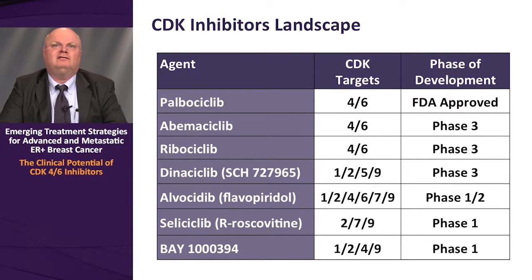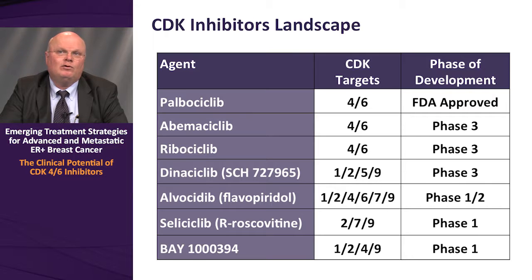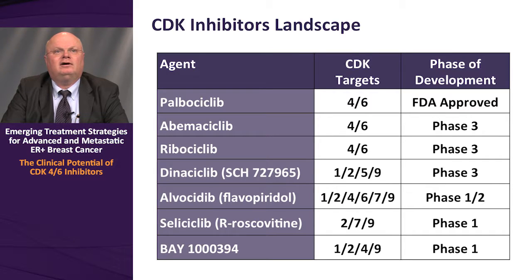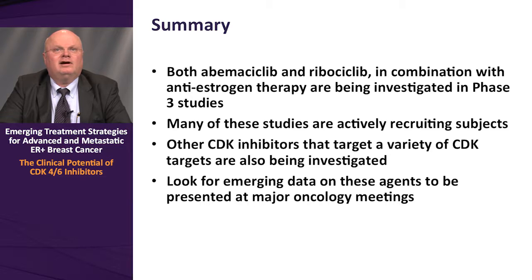In terms of the landscape of the CDK inhibitor class, shown are the agents that have activity for cyclin-dependent kinase 4 and 6, including the three reviewed in this presentation: palbociclib, abemaciclib, and ribociclib. In addition, there are further CDK inhibitors in ongoing clinical development, including those with activity for alternative CDKs such as 1, 2, 4, 5, 6, 7, and 9, shown at the bottom of the slide. Some of these are still in early clinical development while one has advanced to Phase III. In summary, both abemaciclib and ribociclib, in combination with anti-estrogen therapy, are being investigated in ongoing Phase III studies. Many of these studies are actively recruiting subjects. Other CDK inhibitors targeting a variety of CDK targets are also being investigated in the clinic. Look for emerging data on these agents to be presented at major oncology meetings in the future.